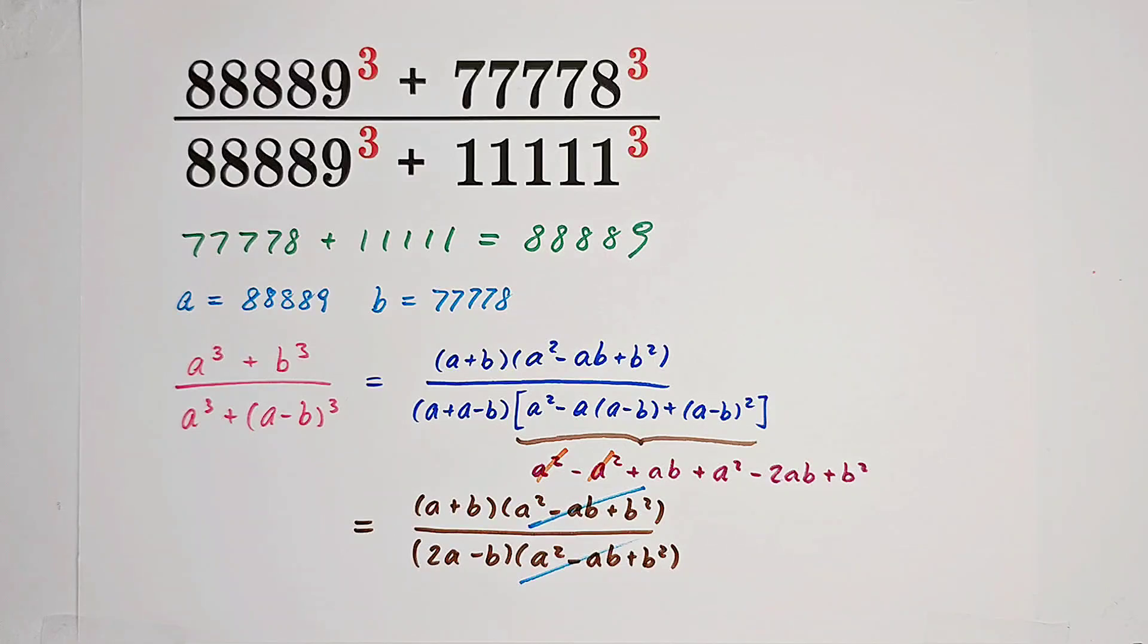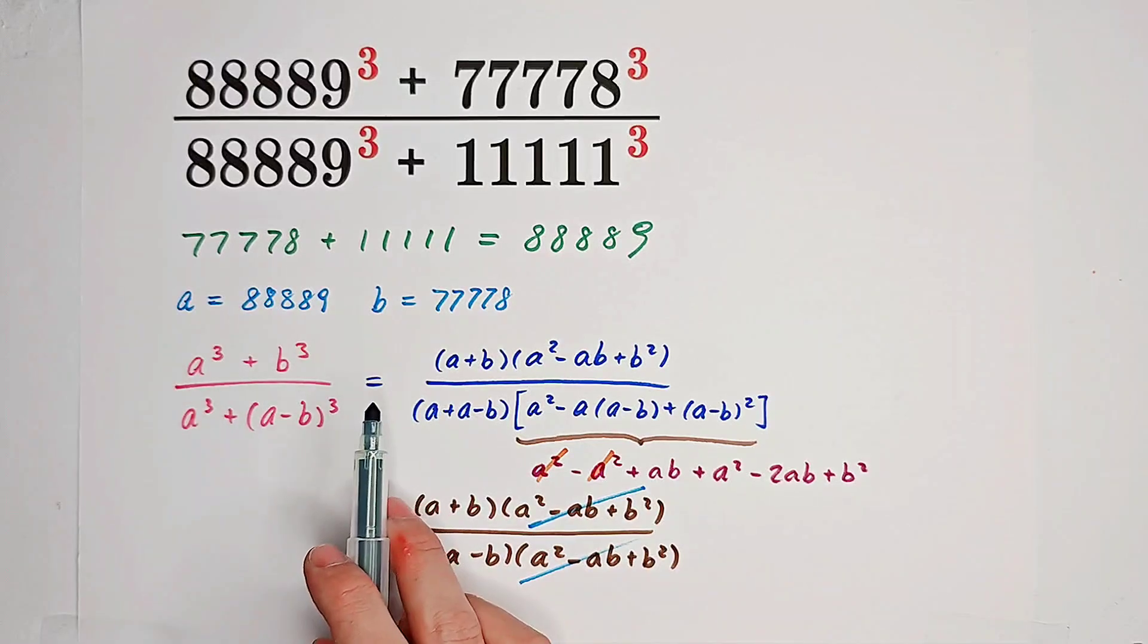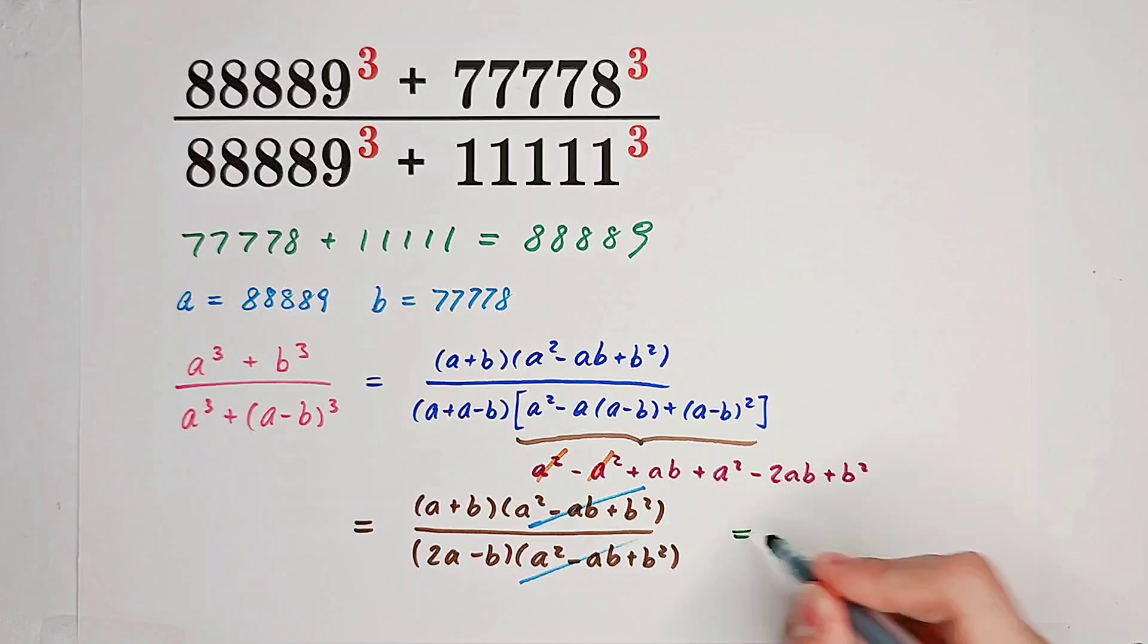And it is of course not equal to zero because we have A is this, B is this one. And if you calculate it, it's not zero. So it means that we just end up with a simple term.